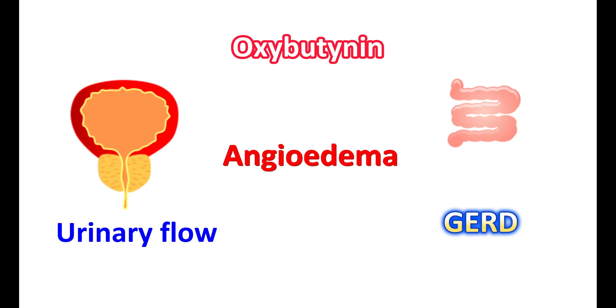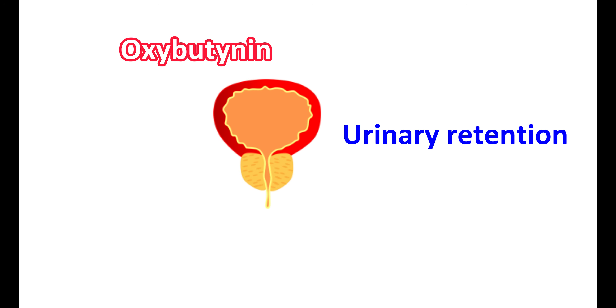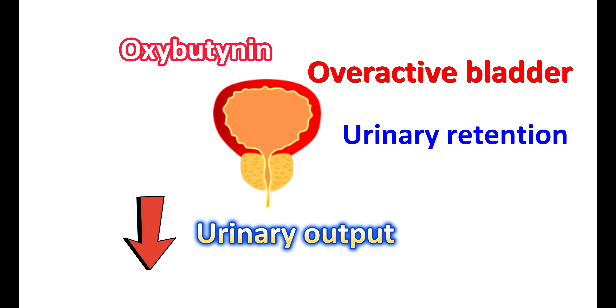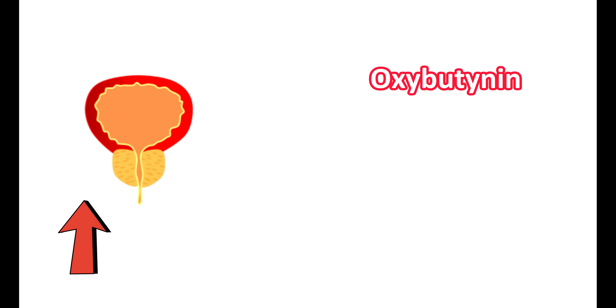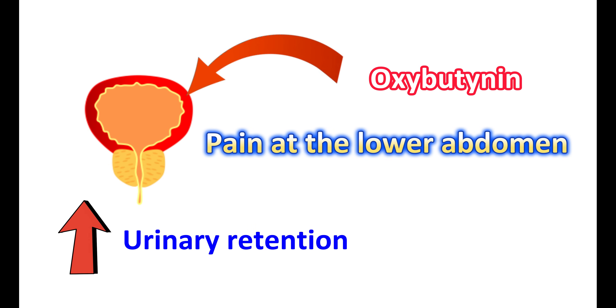Oxybutynin can produce urinary retention. It acts as a bladder relaxant, reducing bladder contractions and leading to decreased urinary output, which is essential for treating overactive bladder. However, decreased urinary volume may be troublesome in people with bladder outflow obstruction. Oxybutynin causes relaxation of the bladder, which produces less pressure on urinary outflow, potentially increasing urinary retention.